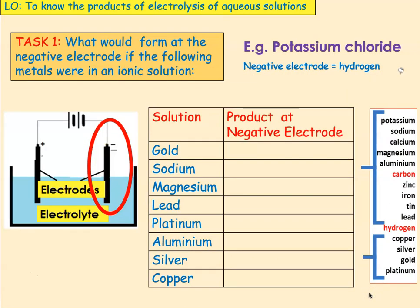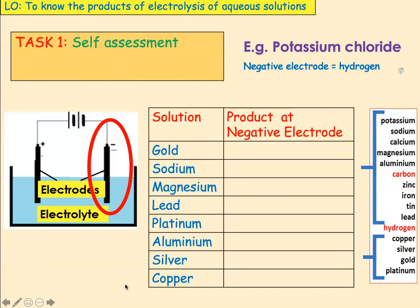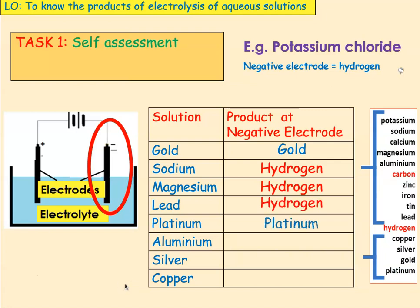Pause the video and tell me what product will form at the negative electrode for each metal in solution. Let's self-assess: gold is below hydrogen, so we form gold. Sodium is above hydrogen, so we form hydrogen. Magnesium is above hydrogen, so we form hydrogen. Lead is above hydrogen, so we form hydrogen. Platinum is below, so we form platinum. Aluminium is above hydrogen, so we form hydrogen. Silver is below, so we form silver. Copper is also below, so we form copper.